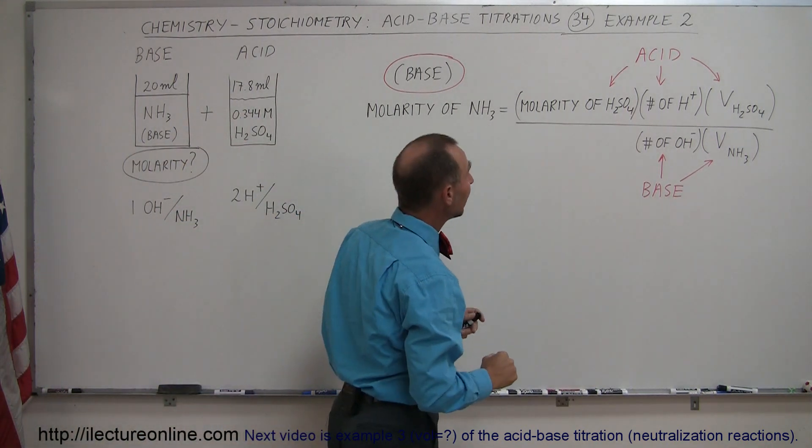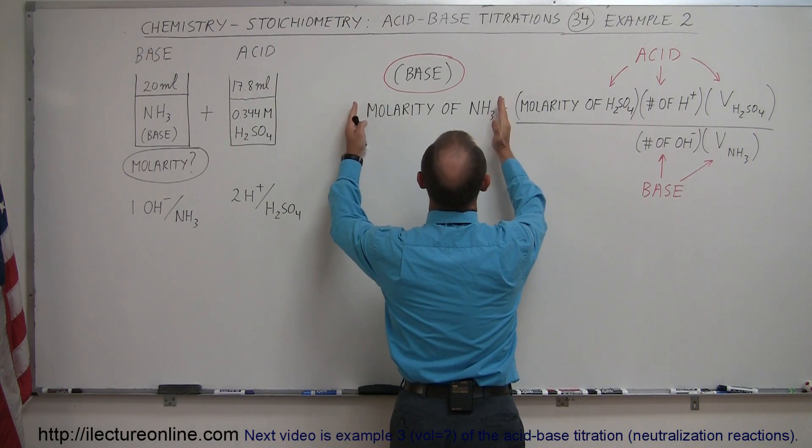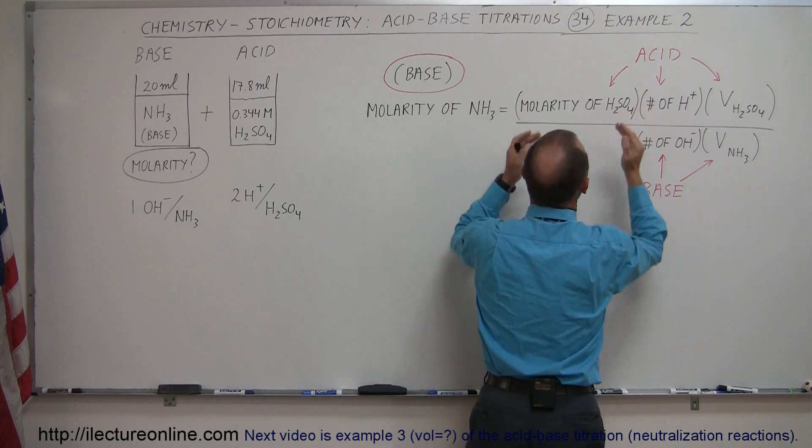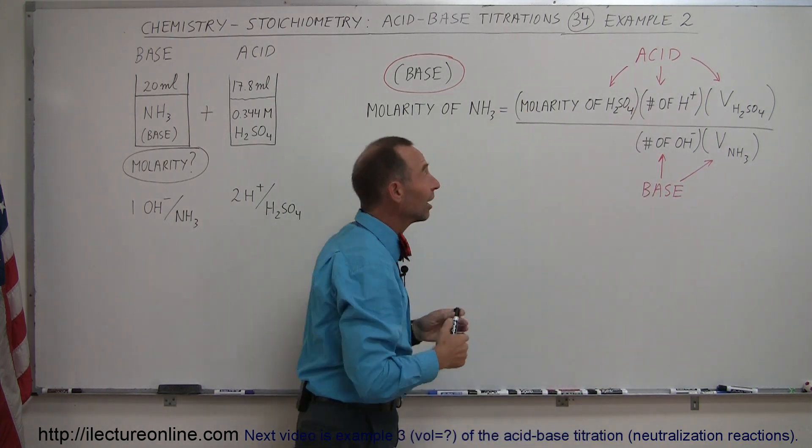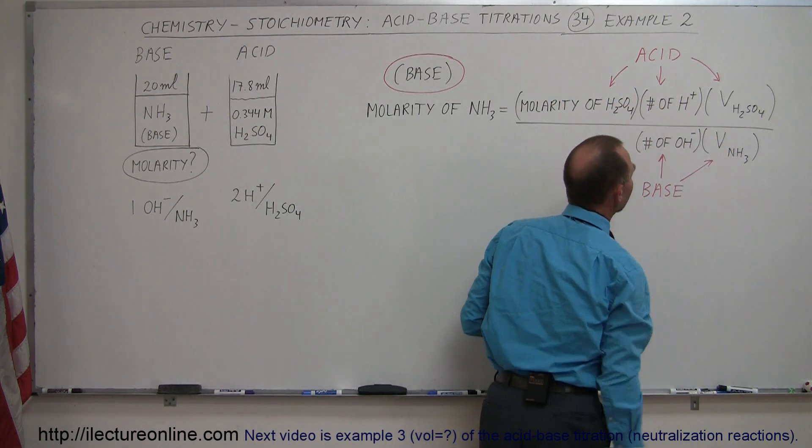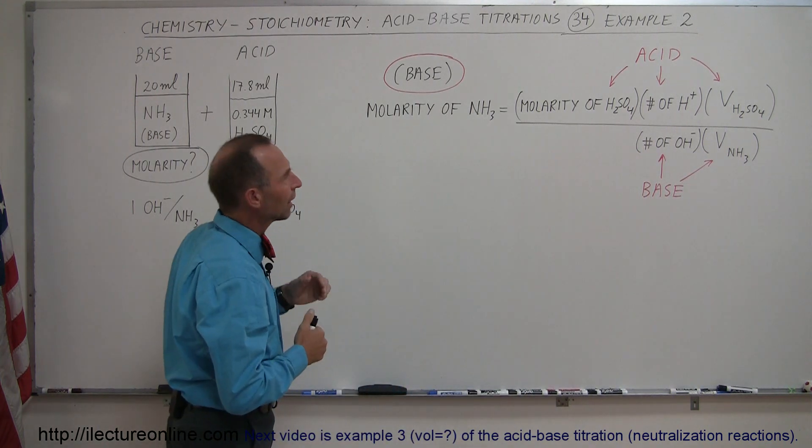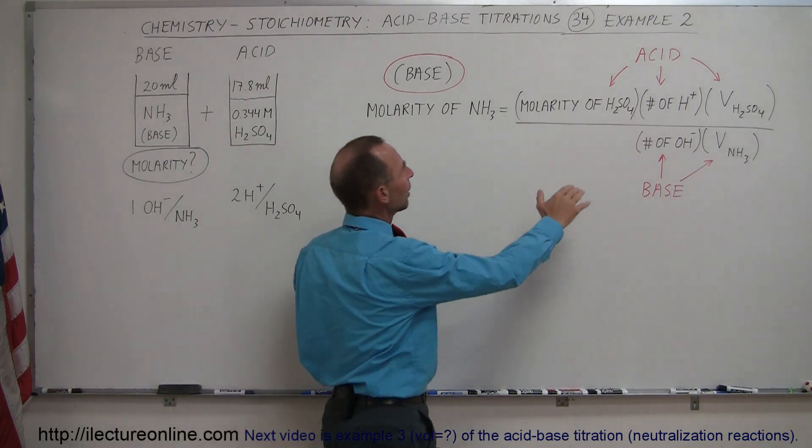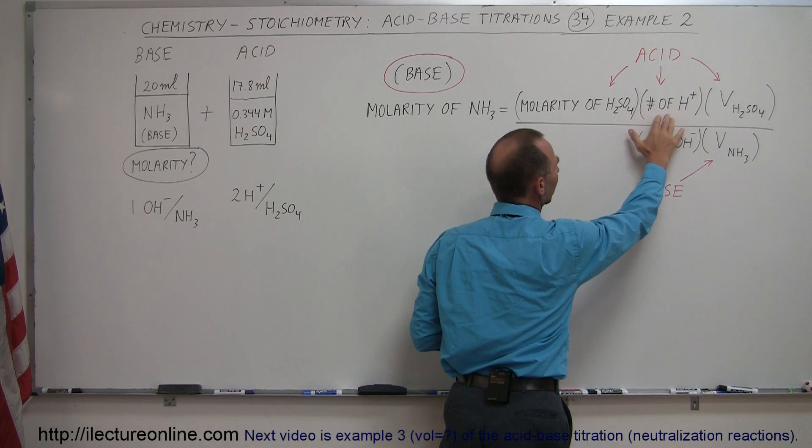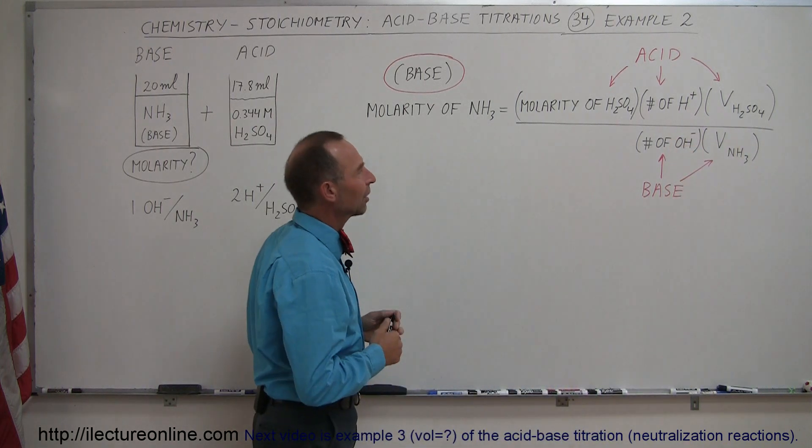What you do then is you make this equation. If you're looking for the molarity of the base, which the molarity is unknown, you put down the molarity of the known acid, in this case acid, and then you put down in the numerator all the particular key elements of the equation that are the acid. For example, you put down the molarity of the acid, the number of hydrogen ions per molecule that are produced, and the volume of the acid you needed to titrate it, to neutralize it.